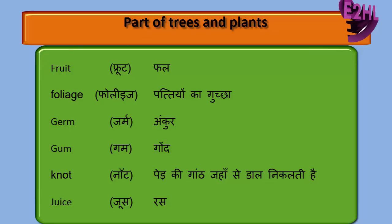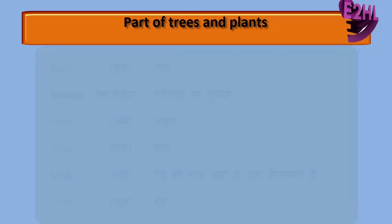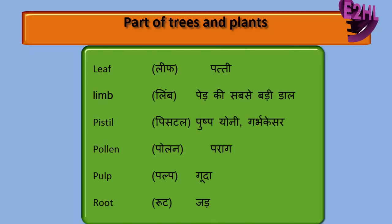Jahaan se dal nikalti hai. Juice — Russ. Leaf — Patti. Limb — Peda Ki Sabse Badi Dal. Fissure — Pus Bioni. Dagab Kesar. Pollen — Parag. Pulp — Guddha.